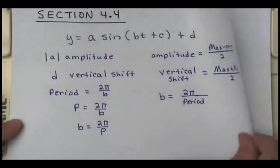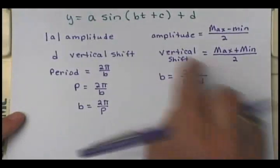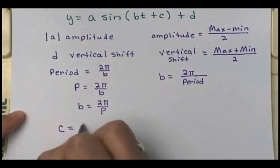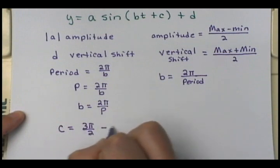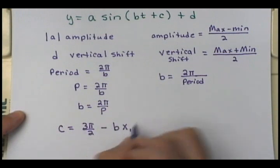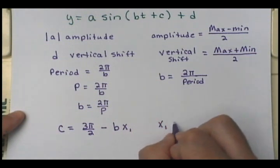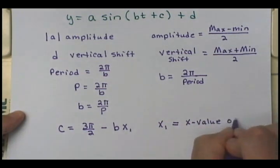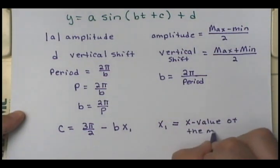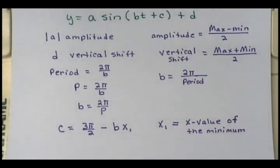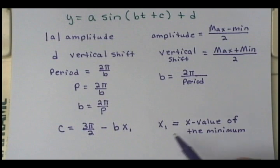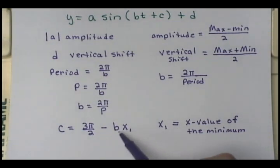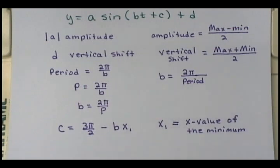To find c, if you ever have a situation where you want to find c, c is equal to 3π/2 minus whatever b was times x-sub-1, where x-sub-1 is the x-value of the minimum. If you know the ordered pair for the max and min, then the x-value of the minimum is what you put there along with the b you already found.